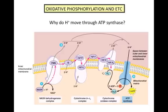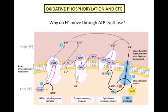Hydrogen ions move through the ATP synthase because of a difference in hydrogen ion concentration on either side of the mitochondrial membrane. The hydrogen ions are more concentrated in the space between the outer and inner membranes than they are in the mitochondrial matrix. As a result, they diffuse along their concentration gradient from an area of high concentration to an area of low concentration, moving through the ATP synthase.